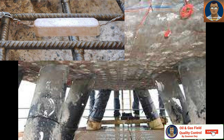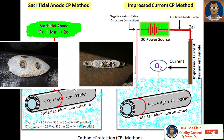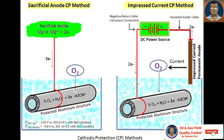So the basic physics for cathodic protection is essentially electrochemical corrosion, where the anode sacrifices itself to protect the tank, pipeline, offshore structure, or whatever is being protected. If you like the way I teach, please don't forget to share and subscribe to my channel, and please don't forget to hit the like button. Thanks for today — signing off, Showman.